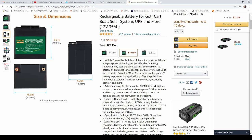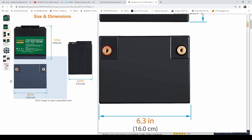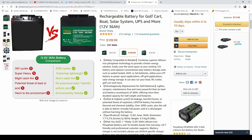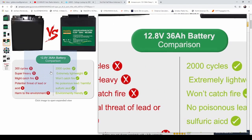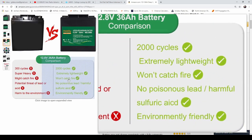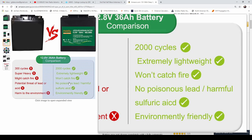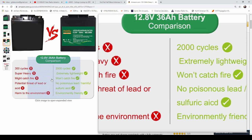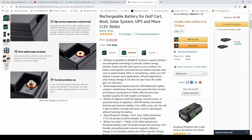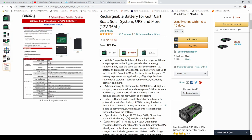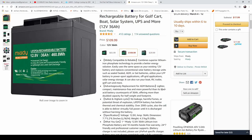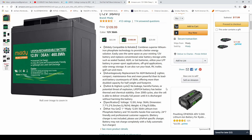Here's all the info. It shows you how many cycles in comparison with the lead acid battery, so you get 300 versus 2,000 cycles. Extremely lightweight, won't catch fire, no poisonous lead or harmful sulfuric acid, environmentally friendly. All the info is on that page. It usually ships within 6 to 10 days. Mine came pretty fast, it was only a few days. Alright, we'll get back to it and do some testing on this thing.